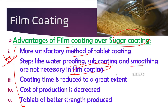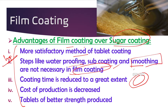In sugar coating, waterproofing is given to protect the tablet from water or solvent. But in film coating, the tablet is already protected by the film, so there is no need for waterproofing or sub-coating. Also, in sugar coating smoothing is important, but in film coating the film itself is smooth. By skipping these steps, coating time is reduced to a great extent, and the cost of production is decreased.